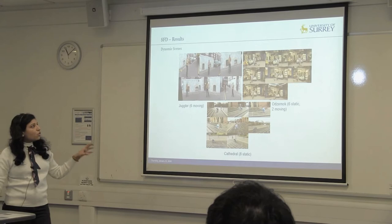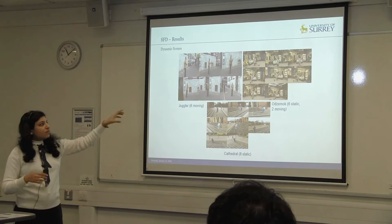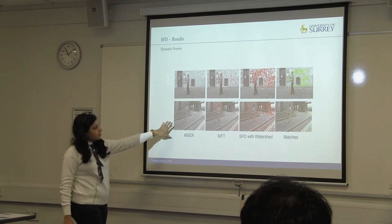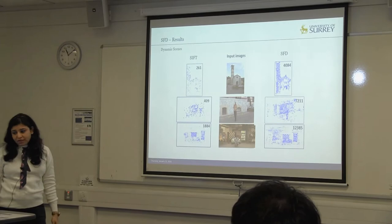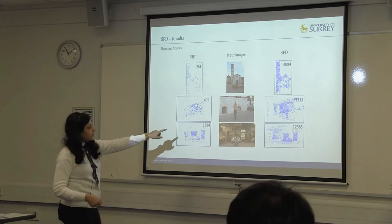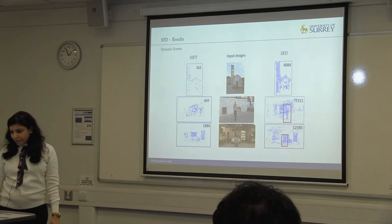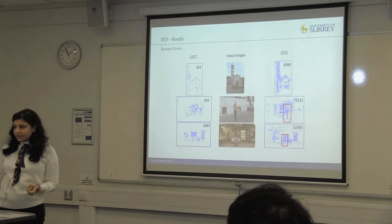Results are shown on three scenes: Juggler, a public dataset captured with six moving cameras, and Onsomop and Cathedral, CVSSP datasets captured with static and moving cameras. SFD clearly outperforms current methods in number of features and matches. The comparison of sparse reconstruction shows SFD generates many more points than traditional methods. Importantly, you are able to get features on dynamic objects in the scene, not just static ones — which is crucial when using this as an initialization for subsequent reconstruction.